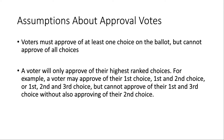The second assumption is that a voter will only approve of their highest ranked choices. A voter may approve of their first choice, or first and second choice, or first, second, and third choice, but they cannot approve of their first and third choice without also approving of their second choice. This applies to examples where a preference ranking table is included along with which candidates are approved of.